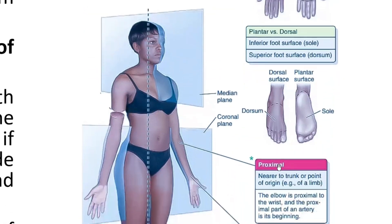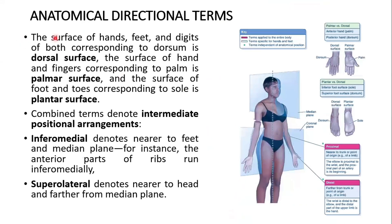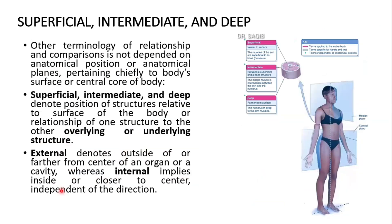The surface of the hands, feet, and digits corresponding to the dorsum is the dorsal surface, while the surface of the hand and fingers corresponding to the palm is the palmar surface. Combined terms denote intermediate positional arrangements — for example, inferomedial denotes nearer to the feet and median plane, as the anterior parts of the ribs run inferomedially. Supralateral denotes nearer to the head and further from the median plane.